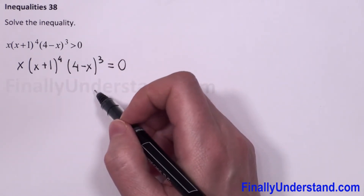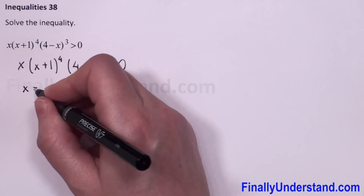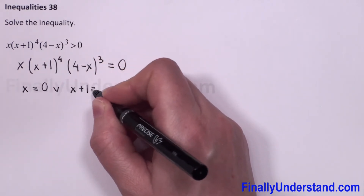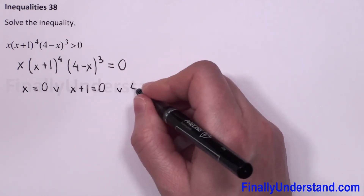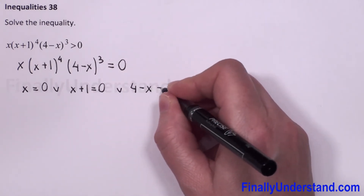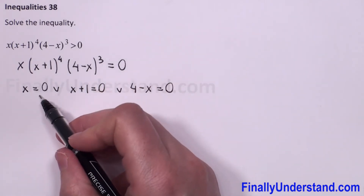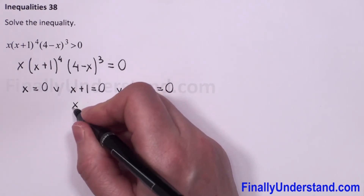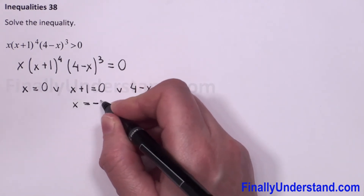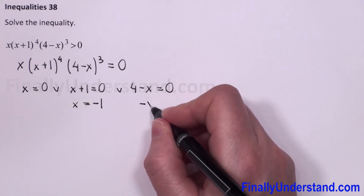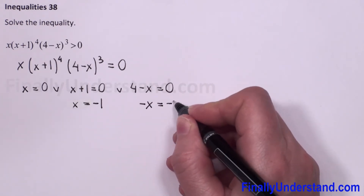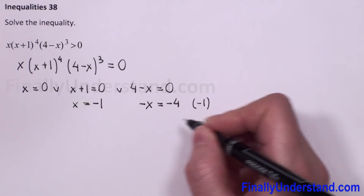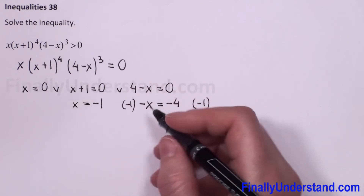The left side equals zero when x equals zero, or (x plus 1) equals zero, or (4 minus x) equals zero. The first equation gives x equals zero. For the second equation, x equals negative 1.